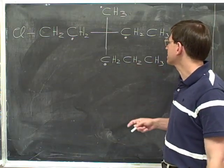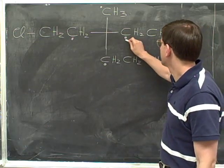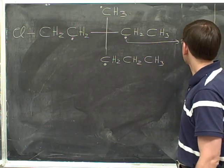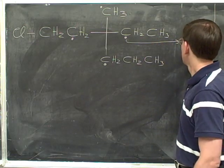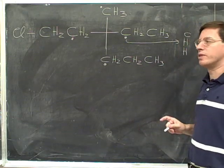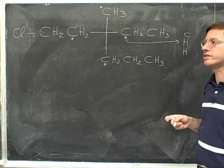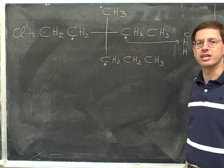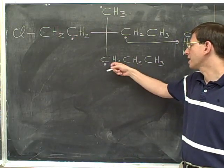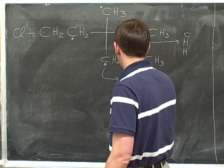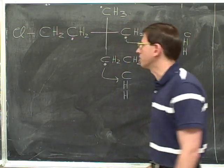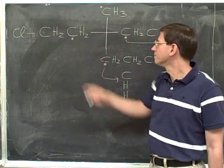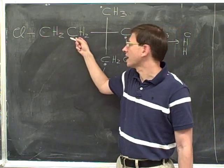Let's start with the carbon on the right. What are the three atoms that this carbon on the right is connected to? It's connected to a carbon and two hydrogens. Remember that we need to put the carbon at the top of the list, because we always list the three atoms from best priority to lower priority. The bottom carbon is also attached to a carbon and two hydrogens. The carbon on the left is also attached to a carbon and two hydrogens.